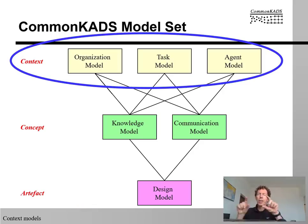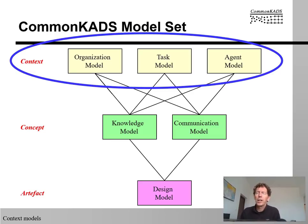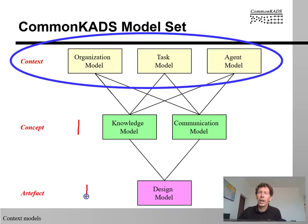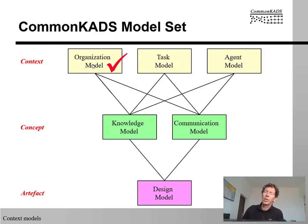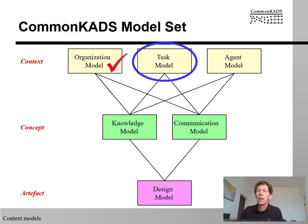Just to remind you where we are in the story: we are building a set of context models, and these context models are so important for deciding which system we are going to build, if we're going to build a system at all. They're not concerned with what the system is going to be internally — that will be the role of the concept model and the artifacts model, the design model. But for now we are concerned with deciding which system we want to build. We have extensively discussed the organizational model, so now we will turn to the last two models: the task model and the agent model, which are a lot less extensive than the organizational model. So let's turn to the task model.